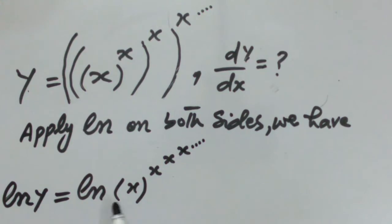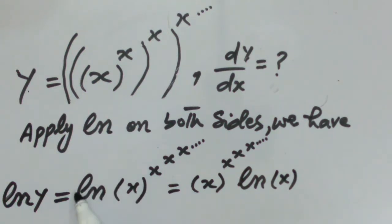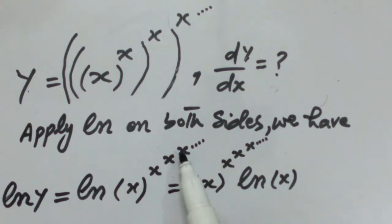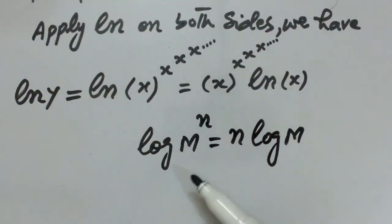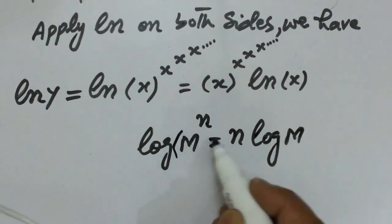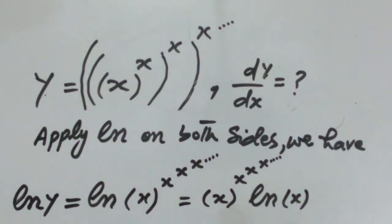We apply natural log on both sides and simplify. The power of x is x, and x^x is x^(x^(x^...)), so this power multiplies with the log. We apply the well-known logarithm formula: log(m^n) = n·log(m).